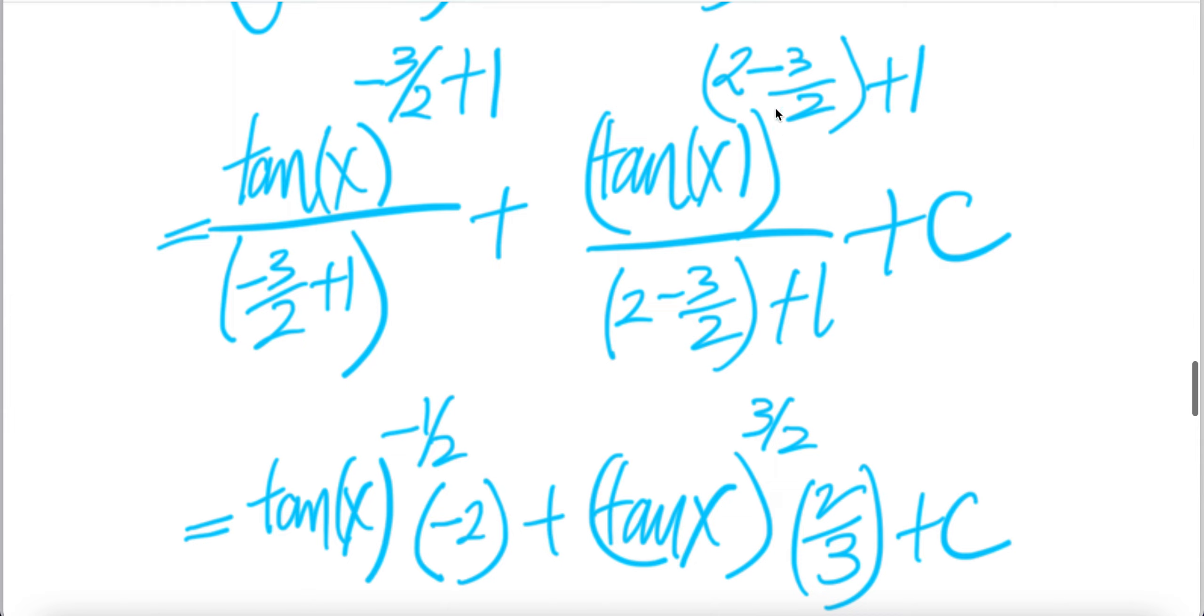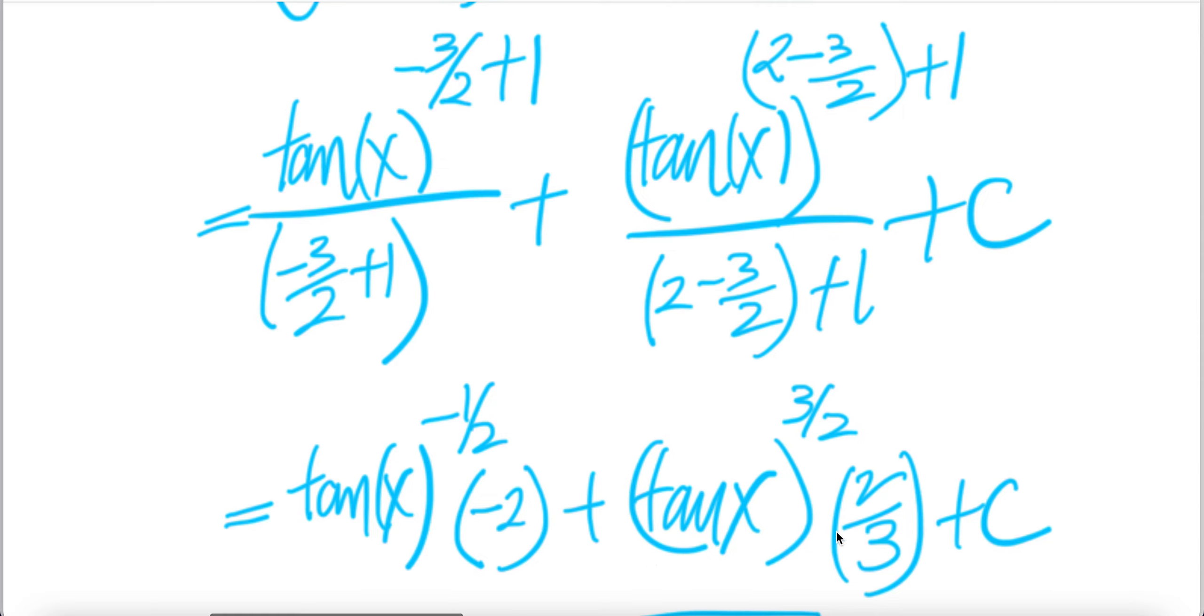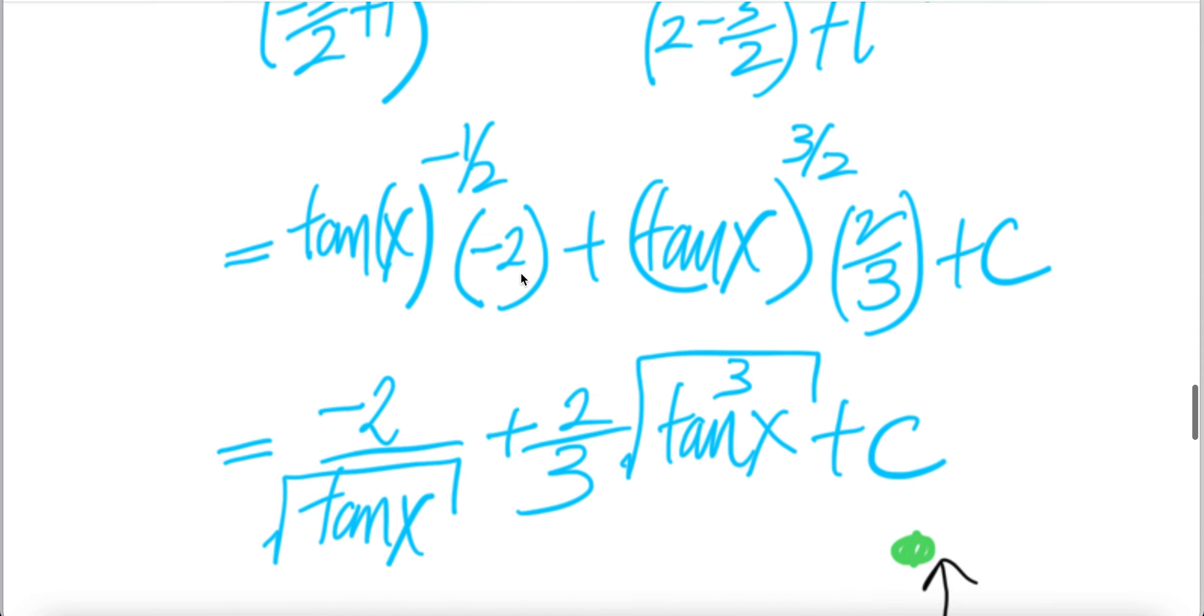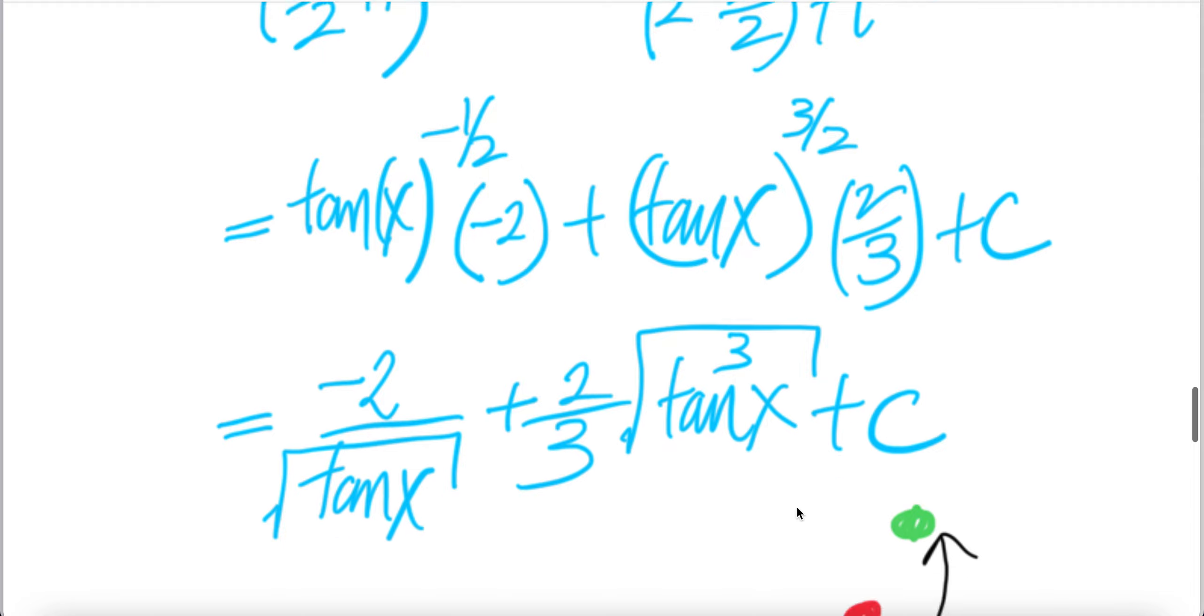Here, 2 plus 1, this and that, you get negative half, 2 minus half is 3 over 2, 3 over 2 exponent, 3 over 2 downstairs, flip it up, it'll be 2 third. Right here, it's just minus 2, and tangent to the power of negative half is square root tangent x, and here will be 2 third in front, and then square root is 1 over 2, and then inside is tangent x cubed plus c. Done.